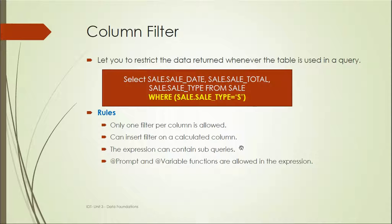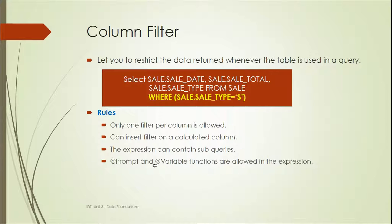A column filter returns data whenever the table is used in a query. It is essentially a self join — for example, where sales dot sales type equals 'S'. The rules for column filters are: only one filter per column is allowed, filters can be inserted on calculated columns, the expression can contain sub-queries, and add prompt and add variable functions are allowed in the expression.